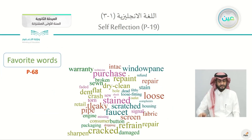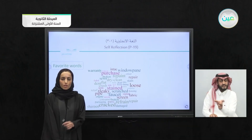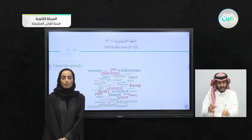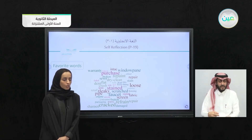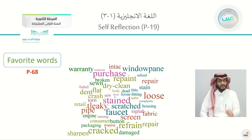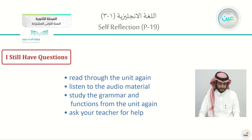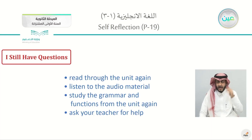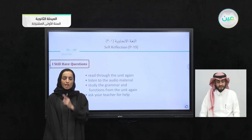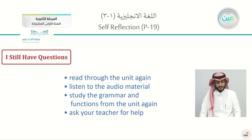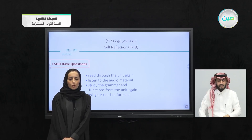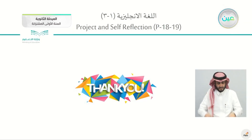In your books, page 68, there is a list of words we mentioned in this unit. Choose three to five of your favorite words — such as stained, dry clean, loose, screen, or faucet — get their meanings, and rewrite them in correctly formed sentences. If you still have questions, read through unit one again and listen to the audio material. Study the grammar, form, meaning, and function from the unit again. And if you still have questions, ask your teachers — they are always there to help. Thank you so much for your time.